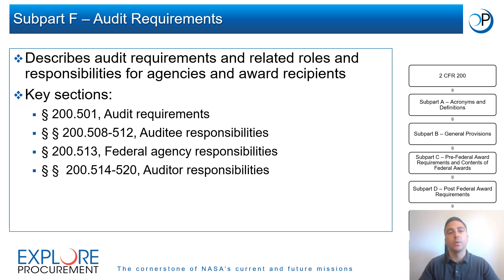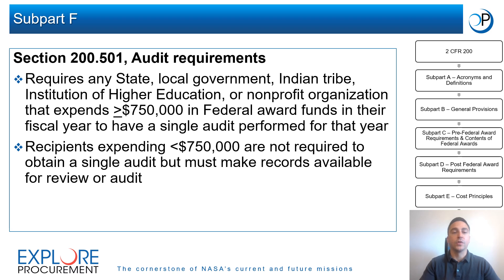Subpart F of 2 CFR 200, titled Audit Requirements, describes audit requirements and related roles and responsibilities for agencies and award recipients. Per Section 200.501, any state, local government, Indian tribe, institution of higher education, or nonprofit organization that expends $750,000 or more in federal award funds in their fiscal year must have a single audit performed. Recipients expending less than $750,000 are not required to obtain a single audit, but must make records available for review or audit by the federal awarding agency, pass-through entity, or the Government Accountability Office, or GAO.